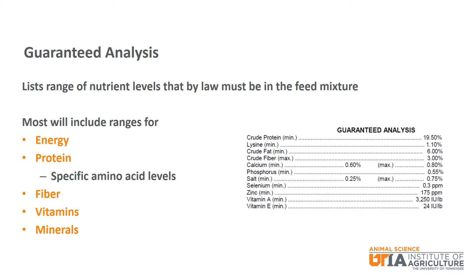The guaranteed analysis is the range of nutrient levels that must be in the feed mixture by law. This could be a minimum, a maximum, or a minimum and maximum. Most feeds will include in some form nutrient levels for energy, protein, fiber, vitamins, and minerals. Many swine feeds will also include levels of specific amino acids like lysine.